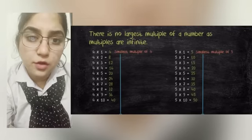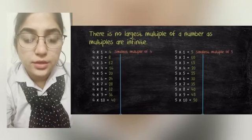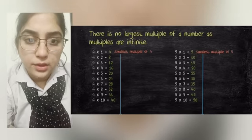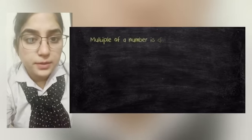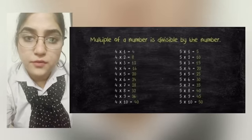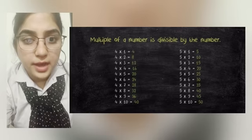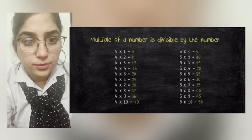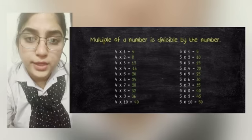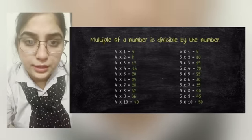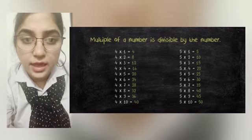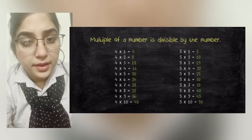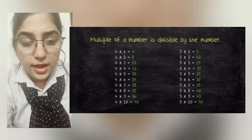The next property is there is no largest multiple of a number, as multiples are infinite. The last property is that a multiple of a number is divisible by that number. For example, multiples of 4 — 12, 16, 24, 32 — are all divisible by 4. Similarly, multiples of 5 — 10, 15, 20 — are all divisible by 5.